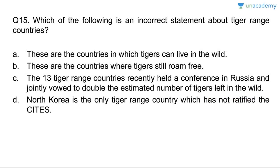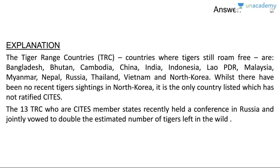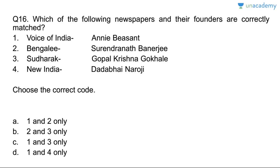Last question for this lesson: which of the following is an incorrect statement about tiger range countries? The statement that tigers can only live in the wild in these countries — this is wrong. North Korea is the only country that has not ratified CITES — correct. Tiger range countries recently held a conference in Russia and jointly vowed to double the estimated numbers of tigers left in the world.